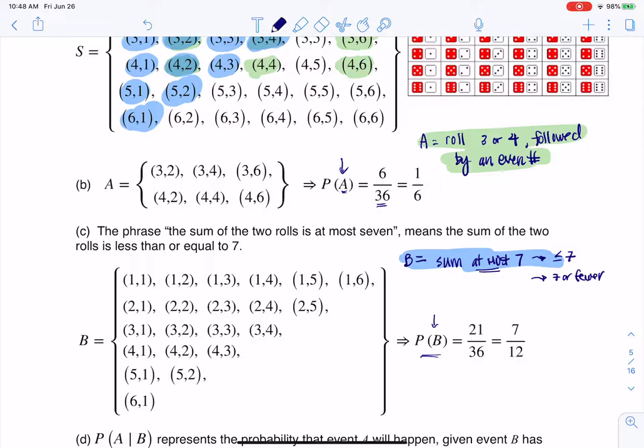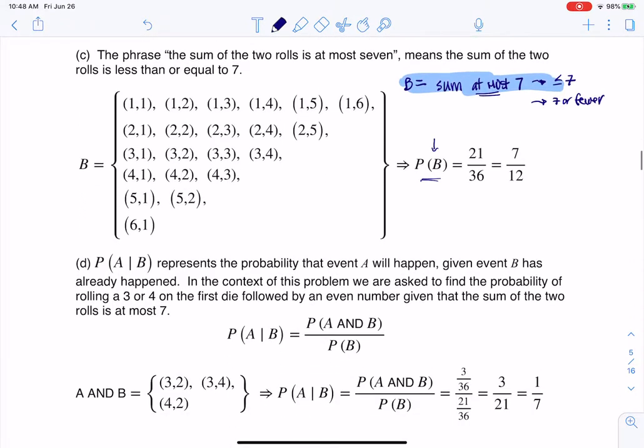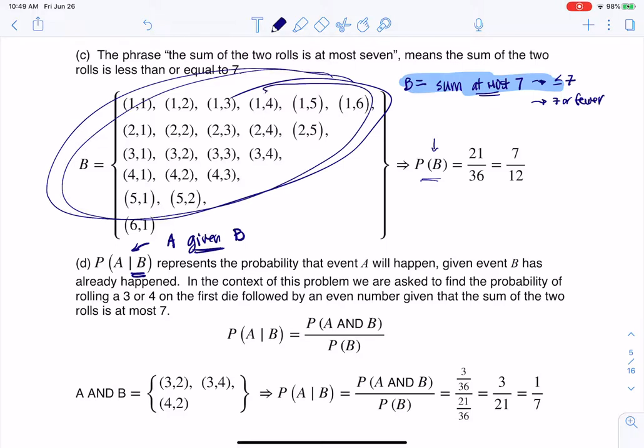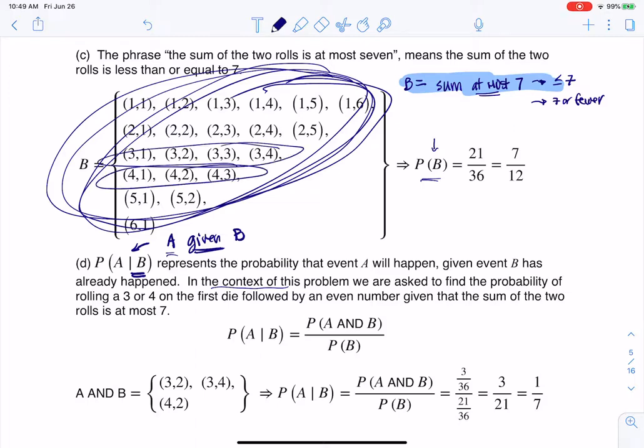So part D says, explain what the probability of A given B represents, and then find that actual probability. So again, this expression, if you say this out loud, this is A given B. And whatever comes after that vertical bar has happened. And what that's trying to say here is you rolled two dice, and you already know one of those 21 outcomes happened. That is a given. And then if you know you rolled two dice, and you have one of these 21 outcomes, how many of them are also in A? So what that's saying, when I say in the context of this problem, we're asked to find the probability of rolling a three or a four on the first die, followed by an even number, given that the sum of the two rolls is at most seven. So given that this has happened, how many of those 21 outcomes had a roll of a three or a four on the first die, and then an even number on the second die?